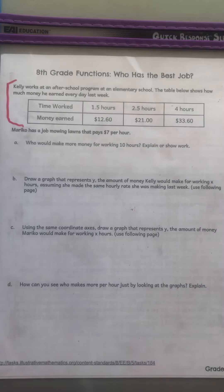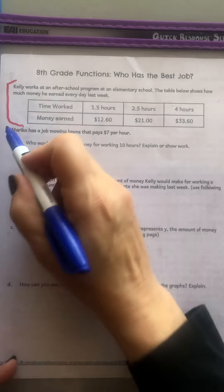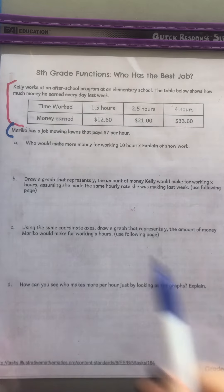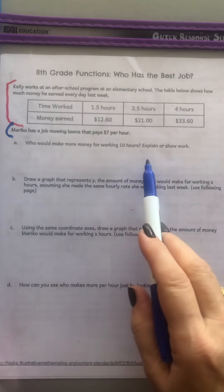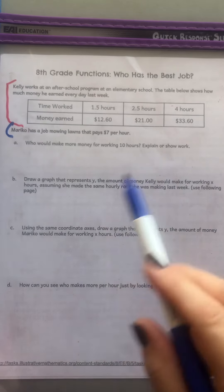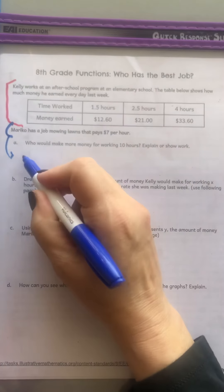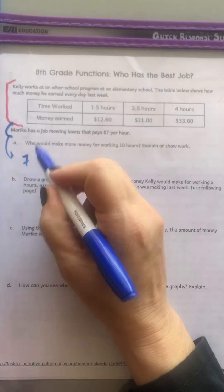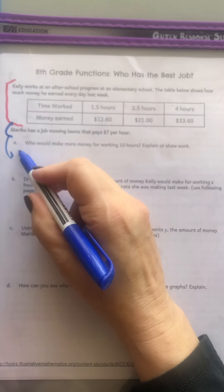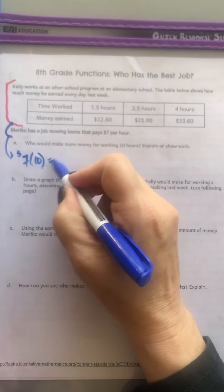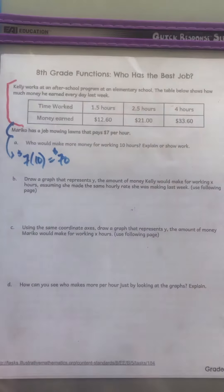Mariko has a job mowing lawns that pays $7 an hour. So first thing you have to do — it says who would make more money working 10 hours? Well, Mariko's easy because he's getting $7 an hour and if he works 10 hours, that's $70. That one's easy.